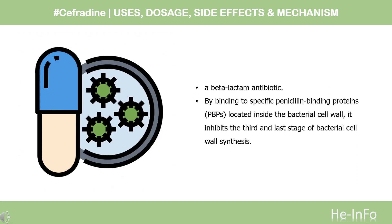Pharmacodynamics. Cephradine, like the penicillins, is a beta-lactam antibiotic. By binding to specific penicillin-binding proteins (PBPs) located inside the bacterial cell wall, it inhibits the third and last stage of bacterial cell wall synthesis.